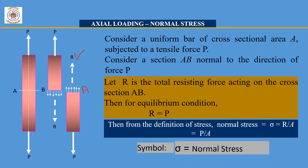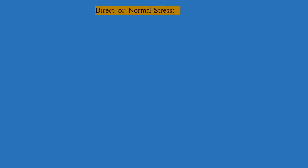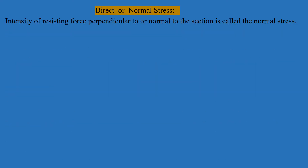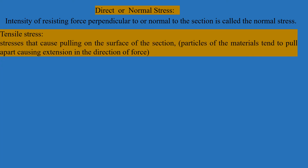The normal stress is defined as the intensity of resisting force normal to the section, or perpendicular to the section. There are two types of normal stress: one is tensile stress and another one is compressive stress. Tensile stress is the stress induced due to the application of two pulling forces in the opposite direction.